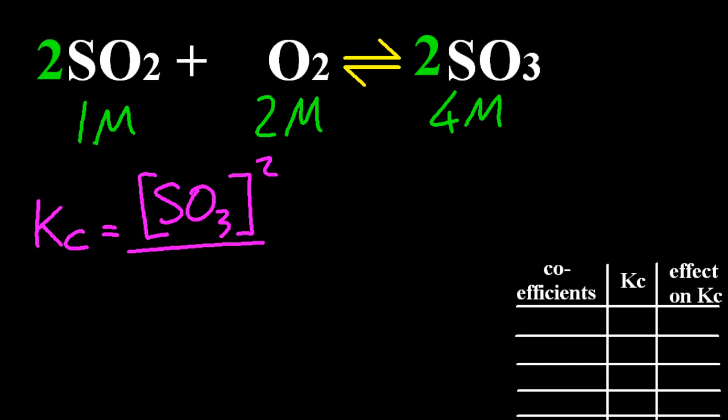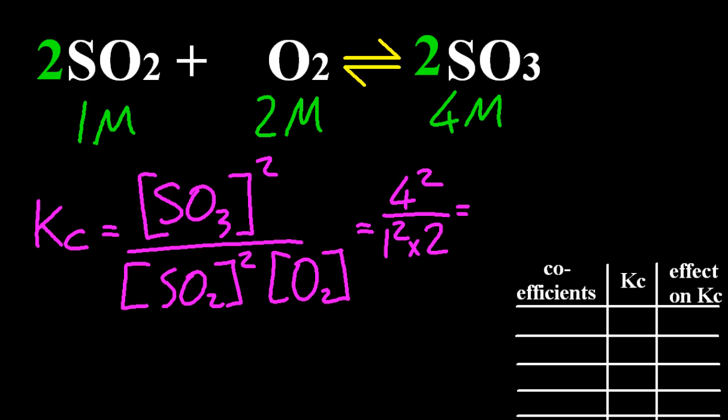Let me write out the equilibrium constant expression Kc and put in my equilibrium concentrations. That's nice, and that gives me 8. I'm ignoring the units for clarity. So if I change the coefficients in the equilibrium equation, is that going to change my value for Kc?